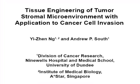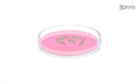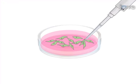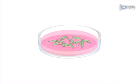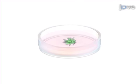The overall goal of the following procedure is to generate a native matrix from fibroblasts for assessing tumor cell invasion. This is accomplished first by growing fibroblasts on plastic in an ascorbic acid-enriched media to generate the native matrix. In the second step, the native matrix is detached and released from the plastic growing surface.